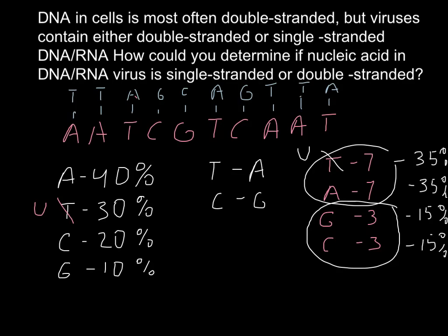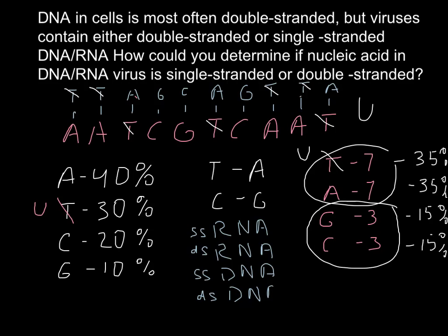Of course, here in all cases, instead of thymine, we would have also uracil. Also, I just want to give you abbreviations so you would know if you see them in literature what they mean. This is single-stranded RNA virus, double-stranded RNA virus, single-stranded DNA virus, and double-stranded DNA. So this is two major groups, RNA viruses and DNA viruses, and they have two subgroups, single-stranded and double-stranded.